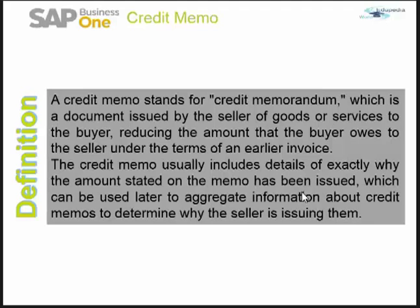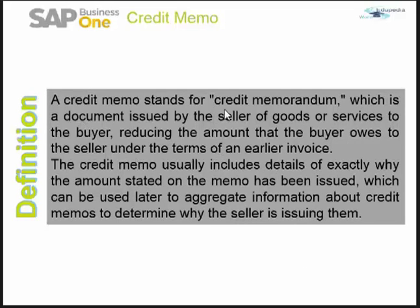Let's see the definition. A typical definition of a credit memo: a credit memo stands for credit memorandum, which is a document issued by the seller of goods or services to the buyer, reducing the amount that the buyer owes to the seller under the terms of an earlier invoice. A credit memo usually includes details of exactly why the amount stated on the memo has been issued, which can be used later to aggregate information about credit memos to determine why the seller is issuing them. This is a typical textbook definition of credit memo.